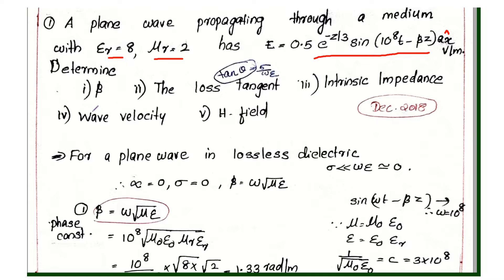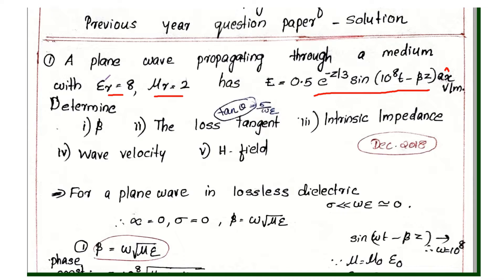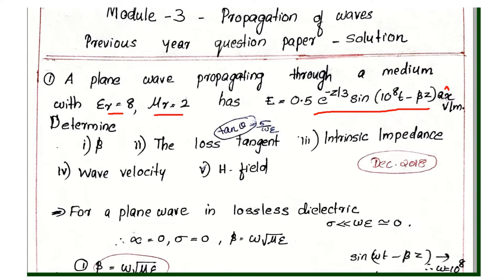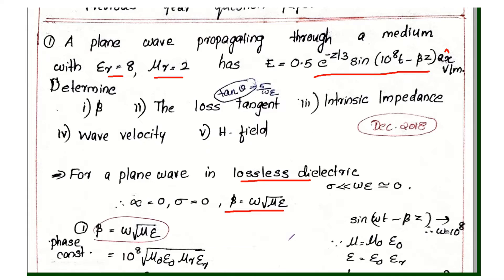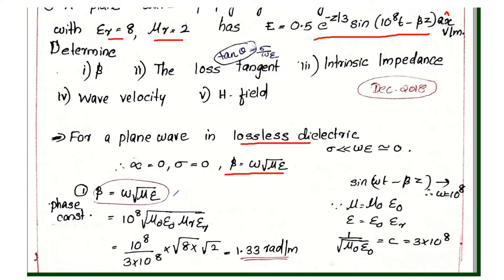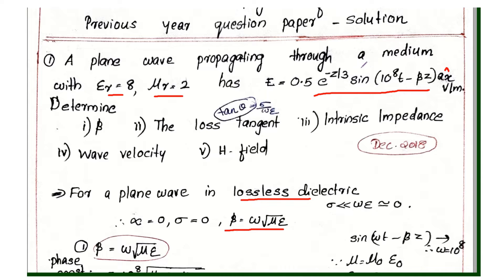First, we find the phase constant beta. Here we have the sigma value, so we are considering this plane wave in a lossless dielectric medium. The value sigma is equal to 0, and also alpha is equal to 0. For a lossless dielectric medium, beta is equal to omega into root of mu epsilon.